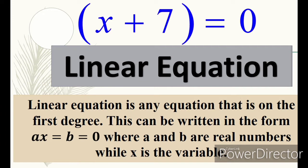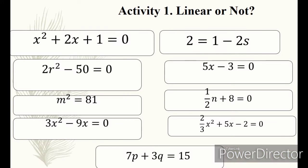Linear equation is any equation that is in the first degree, and this can be written in the form Ax plus b equals 0, where a and b are real numbers while x is the variable. Here is the example of a linear equation. In activity number 1, we are going to identify which is linear and which is not. Let me read the following equations: x squared plus 2x plus 1 equals 0; 2r squared minus 50 equals 0; m squared equals 81; 3x squared minus 9x equals 0.